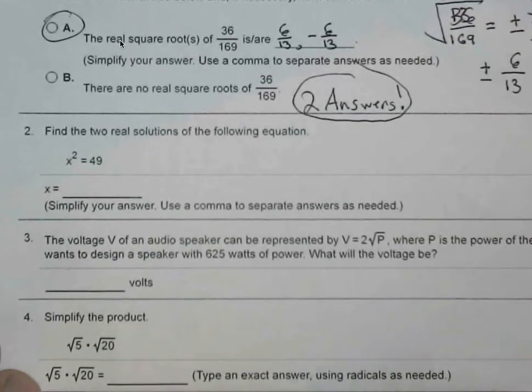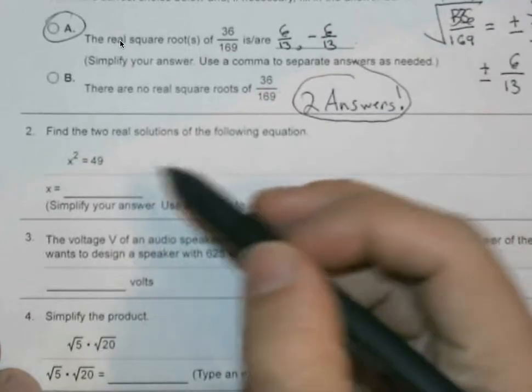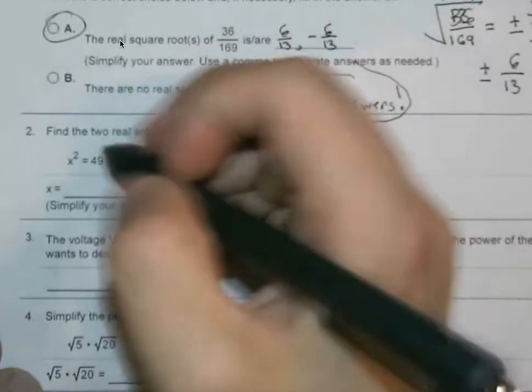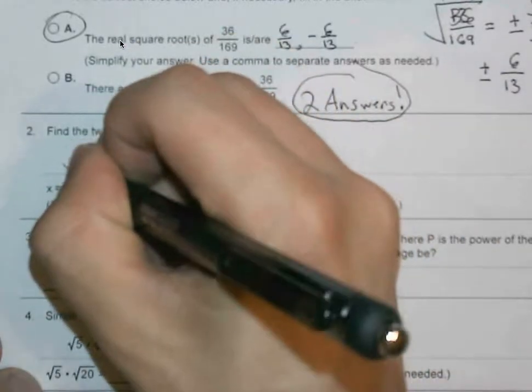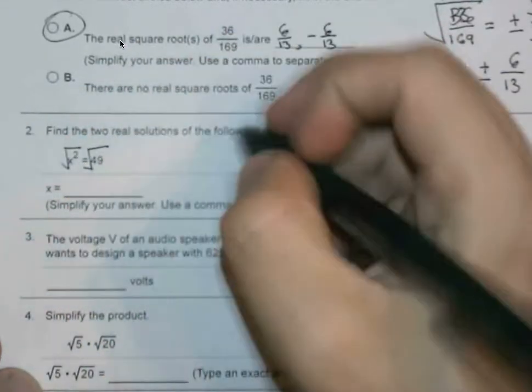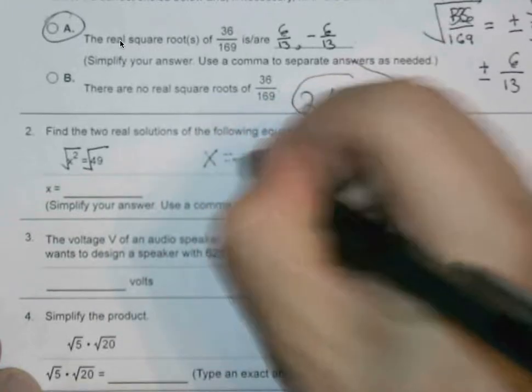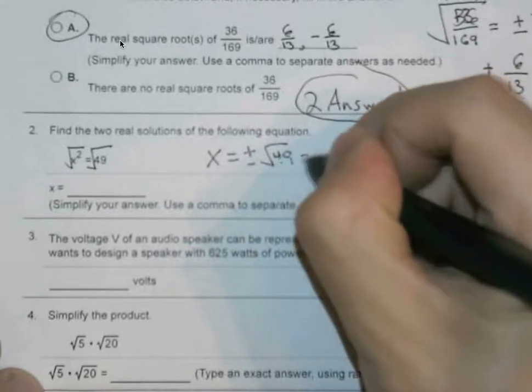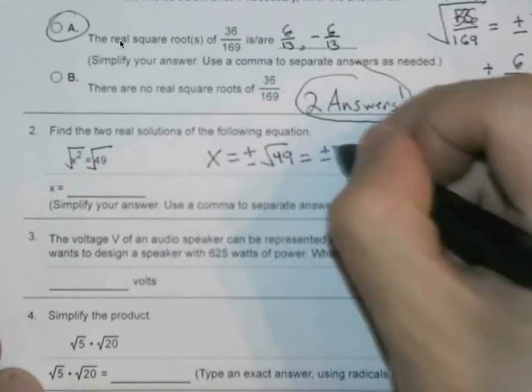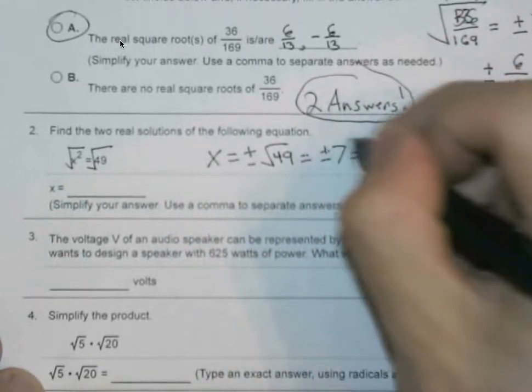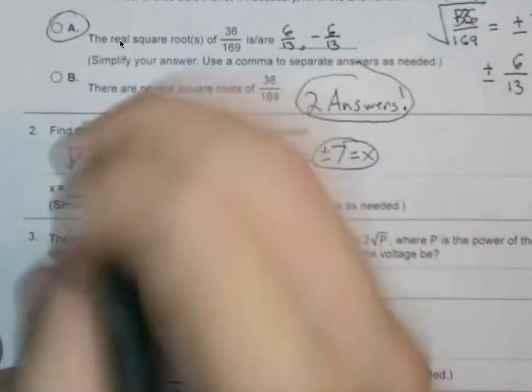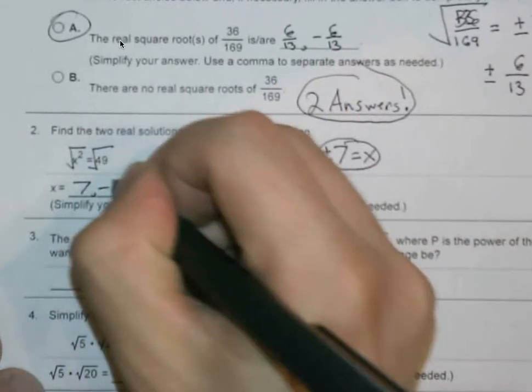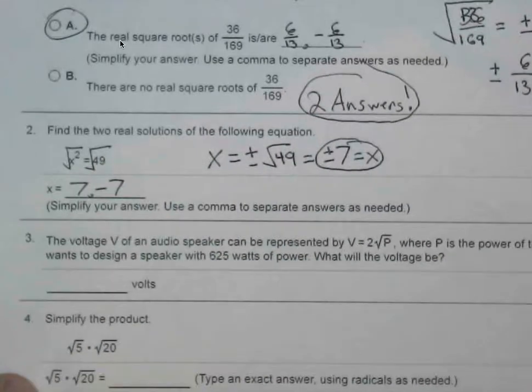We'll see that here also when we're finding the two real solutions for x squared equals 49. x squared is already isolated, so we can just take square roots on both sides, leaving us x equals plus or minus the square root of 49, which when simplified is plus or minus 7. Make sure to use commas when you separate these, that's super crucial.